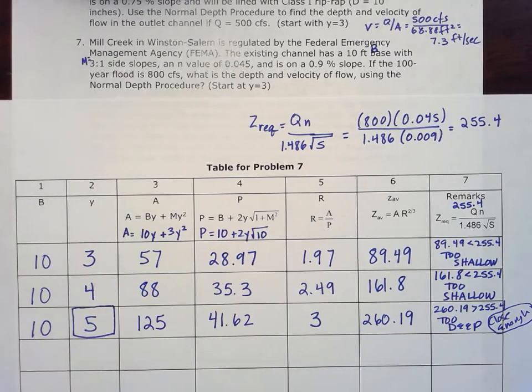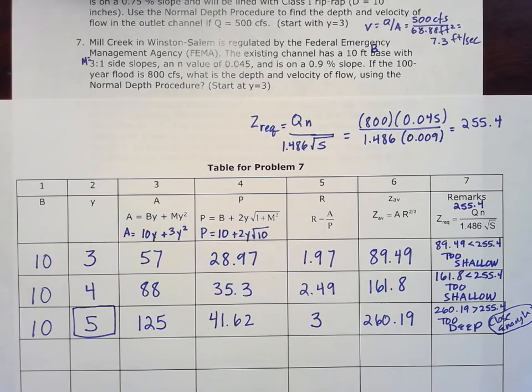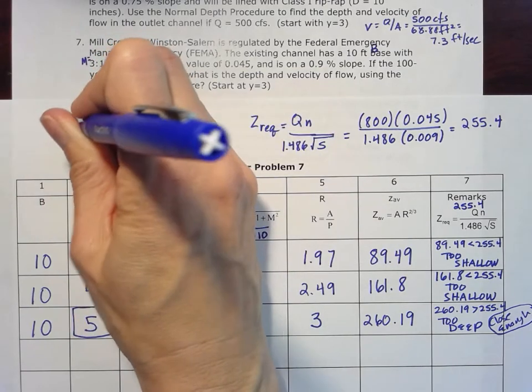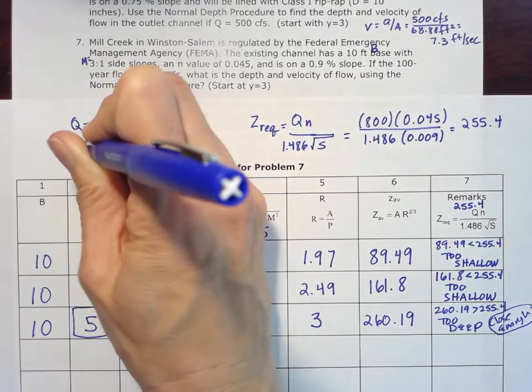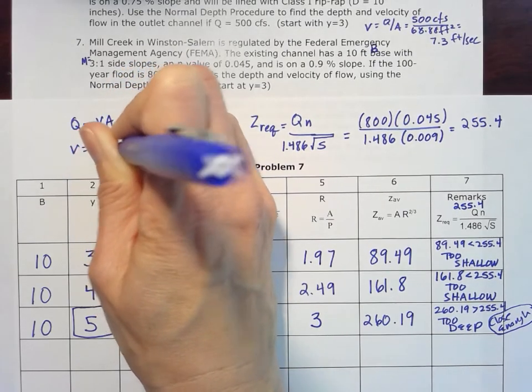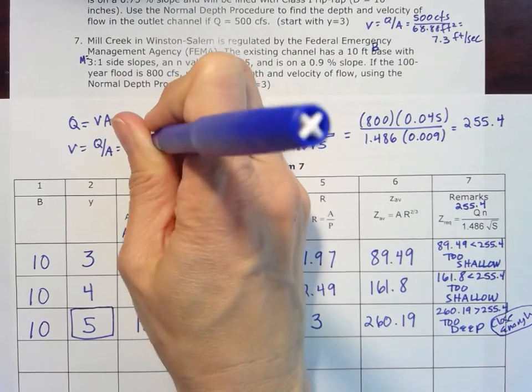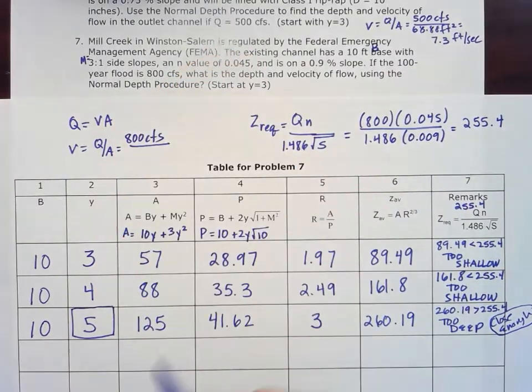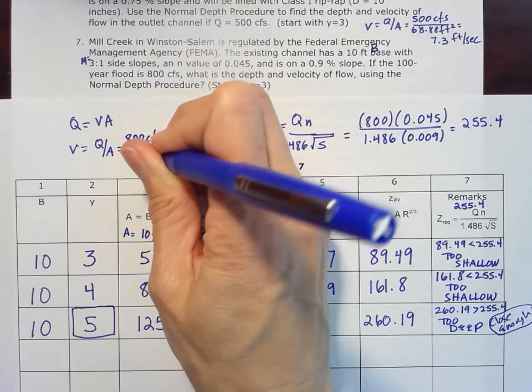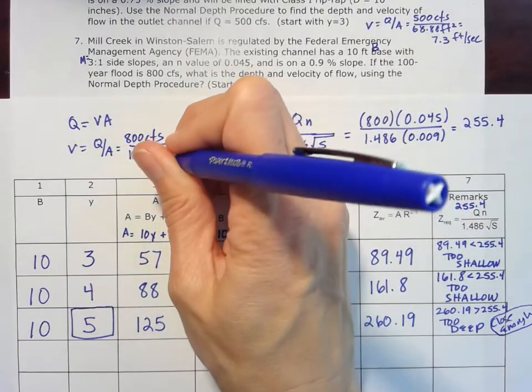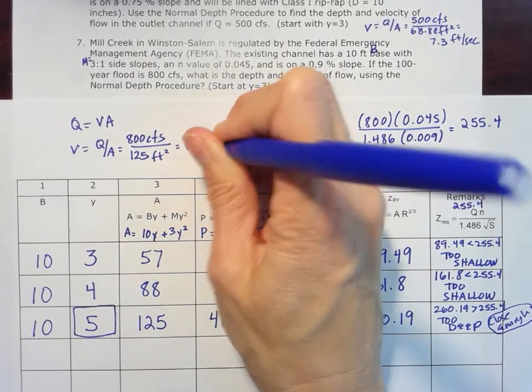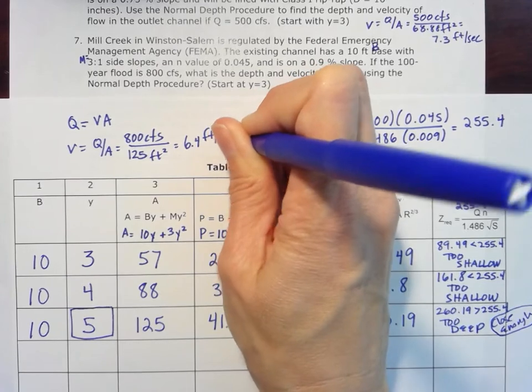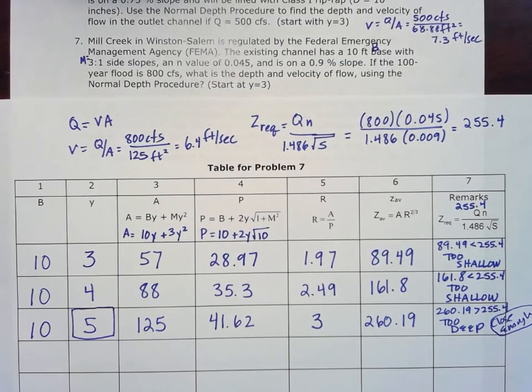And then if I want to find that velocity, remember I can use Q equals VA. I'll put that over here. Q equals VA, so my V is going to be my Q divided by A. Remember my Q is 800 cubic feet per second, and then the area I can just take from this problem, so I'll use the 125 since I'm using the 5 feet for my depth there, 125 feet squared. So that gives me a velocity of 6.4 feet per second at a depth of 5 feet for problem 7.